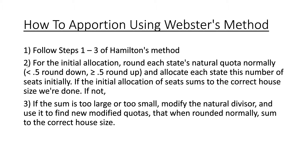Now step two, we introduce the rounding rule, which is going to be different from all of the other methods we saw. For the initial allocation, round each state's natural quota normally, which means if the state quota ends in something smaller than 0.5, round down. If it ends in something greater than or equal to 0.5, round up. And allocate each state this number of seats initially.